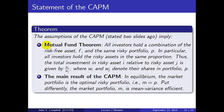The main theorem states that the assumptions of the CAPM imply two things. First, the mutual fund theorem: all investors hold a combination of the risk-free asset F and the same risky portfolio p. This implies that all investors hold risky assets in the same proportion — the total investment in risky asset i relative to risky asset j is always given by W_i divided by W_j, where these Ws denote the shares of the assets in portfolio p.